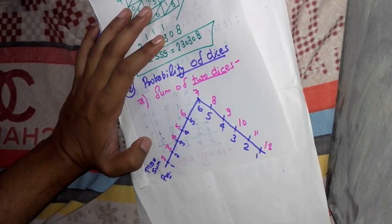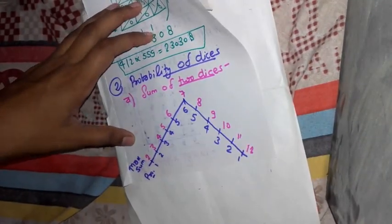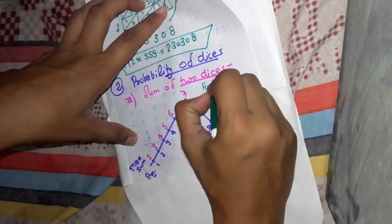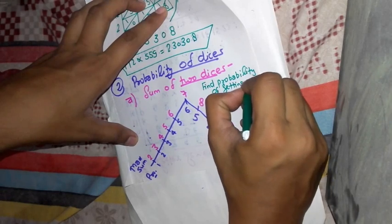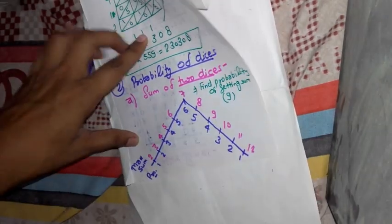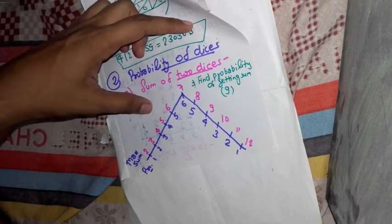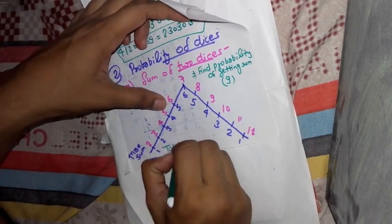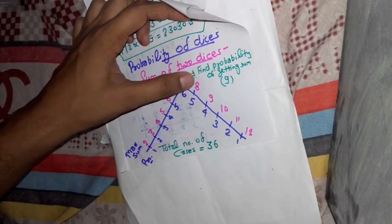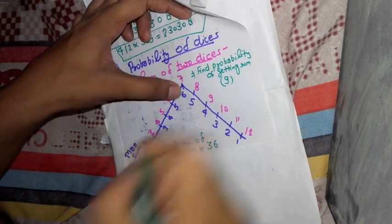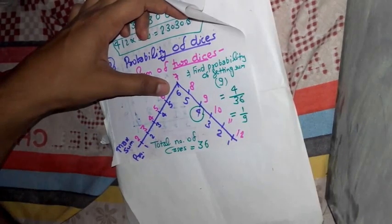Now let's take an example. If we need to find the probability of getting sum 9. In that, if we toss two dices, then the total number of cases is 36. And find probability of getting sum 9 is 4. So answer is 4 by 36, that is 1 by 9. It is quite simple.